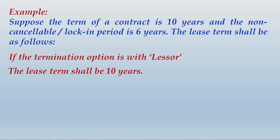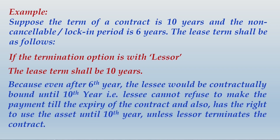The termination option is with the lessor, meaning only when the lessor wants will the lessor terminate. Therefore, after six years, if the lessor does not terminate, the lessee will be bound to make payments further. The conclusion is that the lease term shall be ten years because even after the sixth year, the lessee would be contractually bound until the tenth year — the lessee cannot refuse to make payments till expiry of the contract and has the right to use the asset until the tenth year unless the lessor terminates.